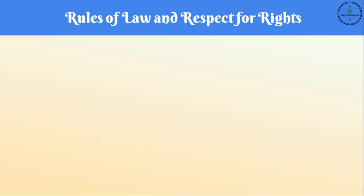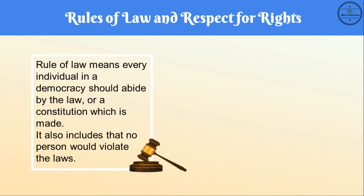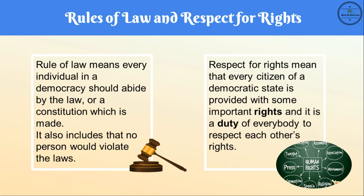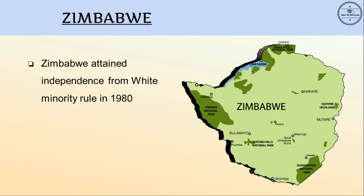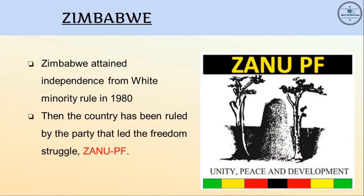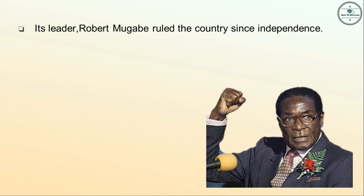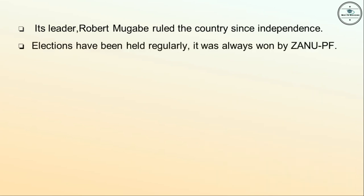Rule of law means every individual in a democracy should abide by the law or constitution, and no person should violate the laws. Respect for rights means every citizen of a democratic state is provided with important rights and it is a duty of everybody to respect each other's rights. Zimbabwe attained independence from white minority rule in 1980. The country has been ruled by ZANU-PF, and its leader Robert Mugabe ruled the country since independence. Elections were held regularly and always won by ZANU-PF.